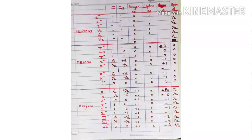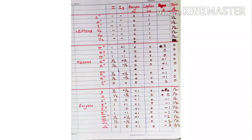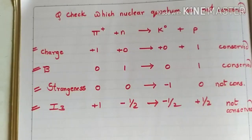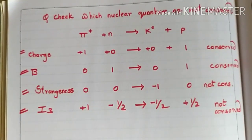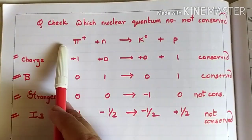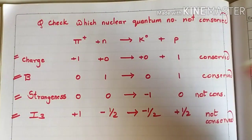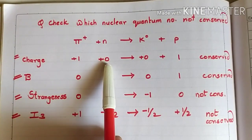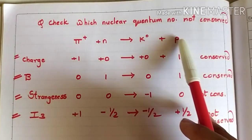Feed in all these spin values into the chart. Leptons are fermions so they have one-half spin; mesons are bosons so they have zero spin; baryons are fermions with one-half spin, except omega minus which has three-halves spin. Pause the video and note the whole chart. Now we'll solve the question discussed in our original video on elementary particles. The equation is: pi positive plus n gives K-naught plus p. We need to see for which quantum numbers this relation is not conserved.